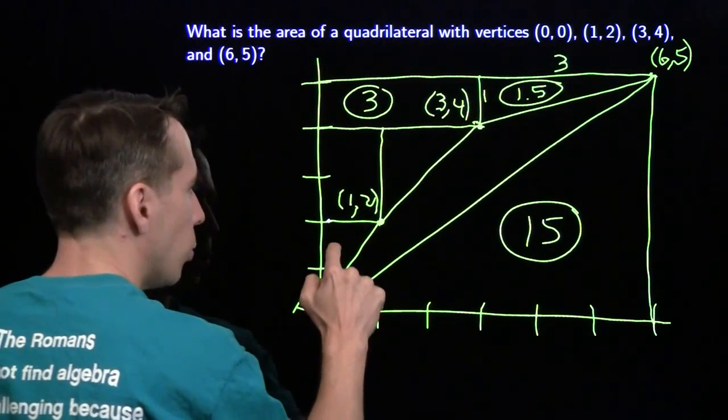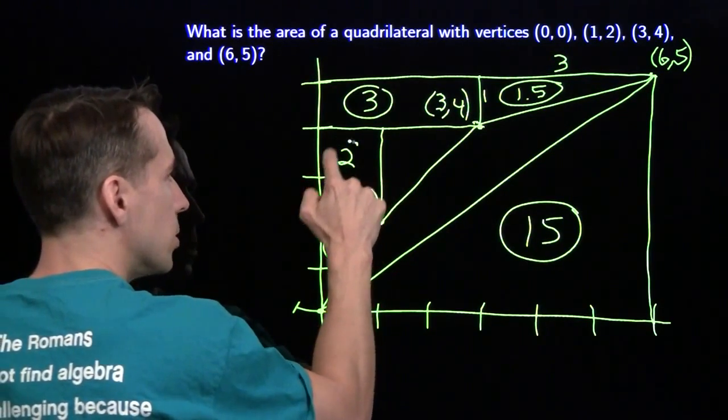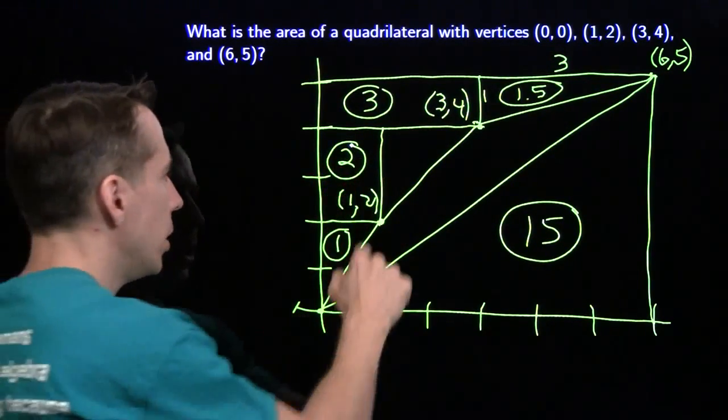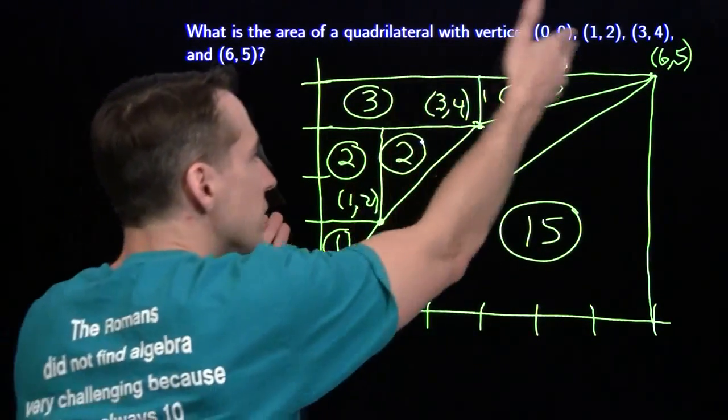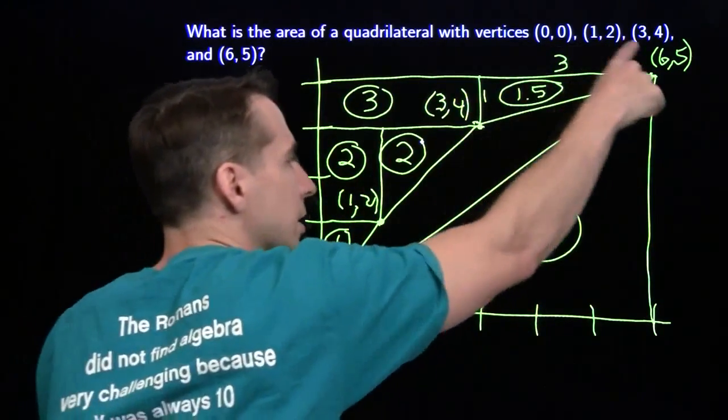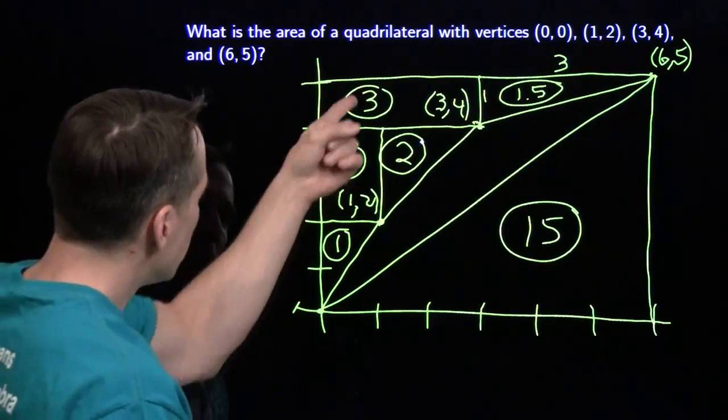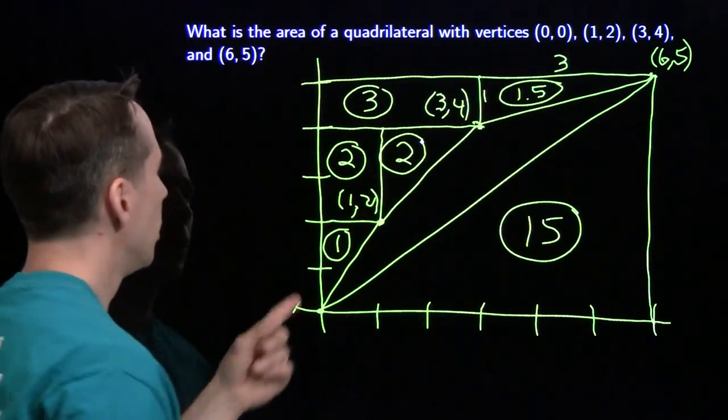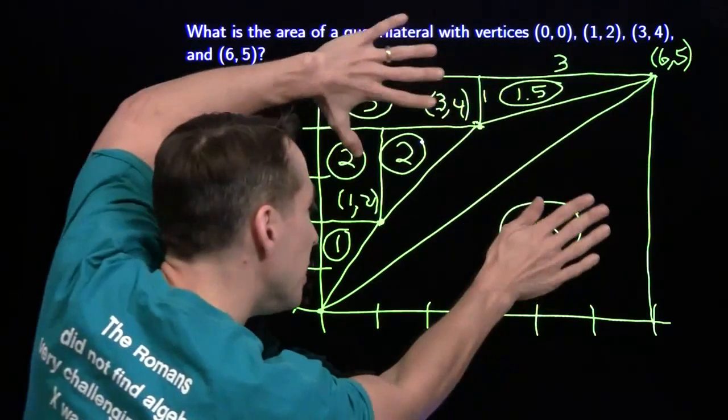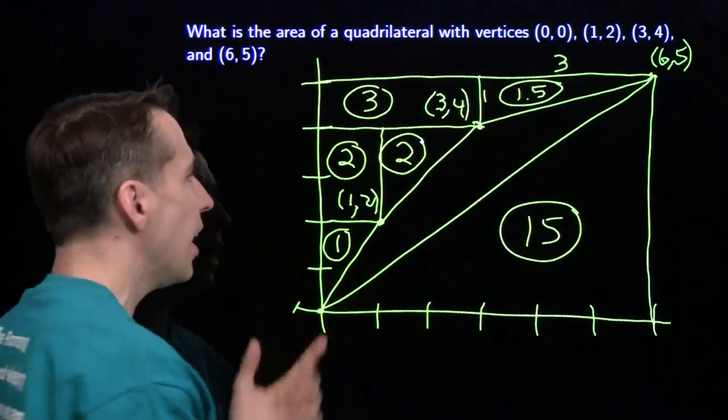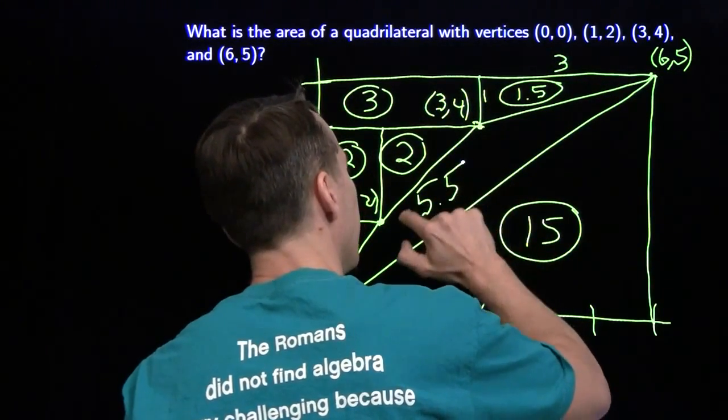This has length 2, this has length 1, that means this has area 2 times 1 divided by 2 is 1. I've got a 2 by 1 rectangle, area is 2. And a right triangle, legs are 2 and 2, the area is 2 times 2 divided by 2 is 2 as well. So I've got all the outside pieces. The whole rectangle has area 30, so I just add up all these pieces and subtract. We have 15, 2 and 3 gives us another 5, that's 20. Add 1 and 2 gives us 23, 1.5 brings us up to 24.5. Subtract the 24.5 from the whole rectangle and we get our answer, which is 5.5.